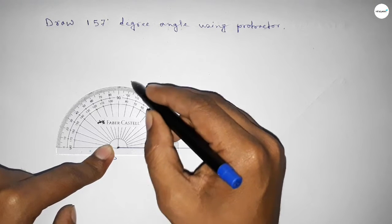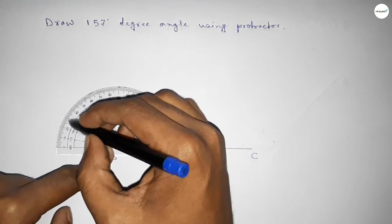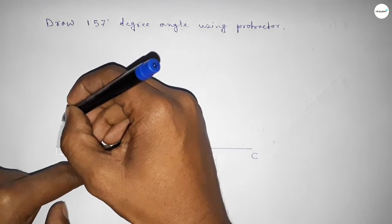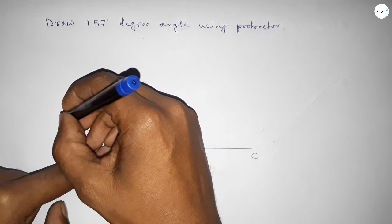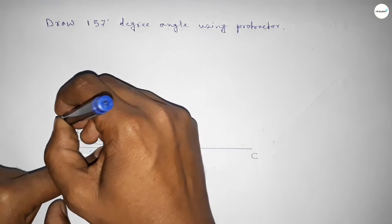50, 60, 70, 80, 90, 100, 110, 120, 130, 140, 150, 155, 156, 157. So this is 157 degrees.